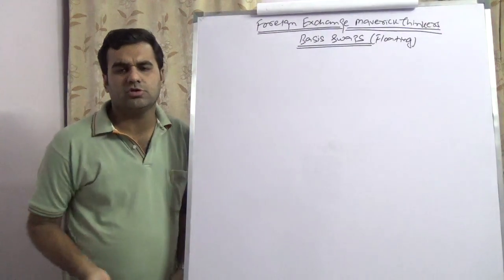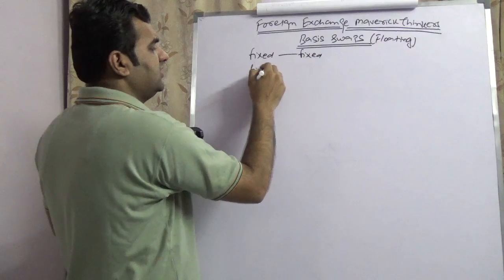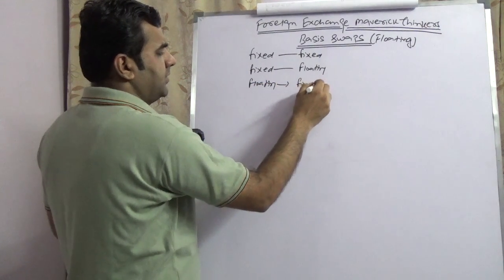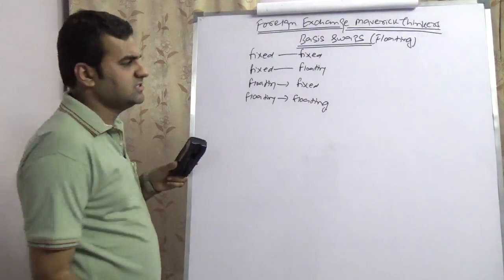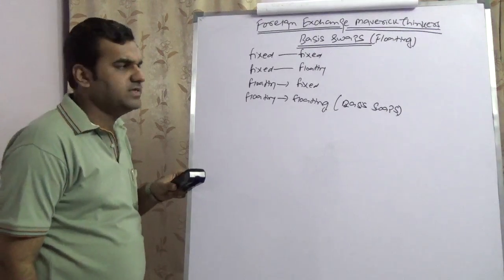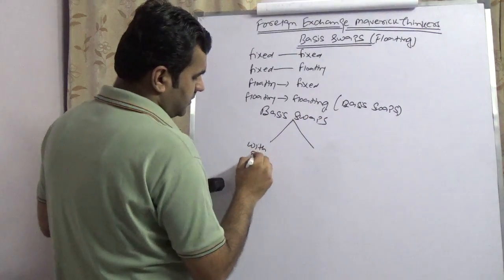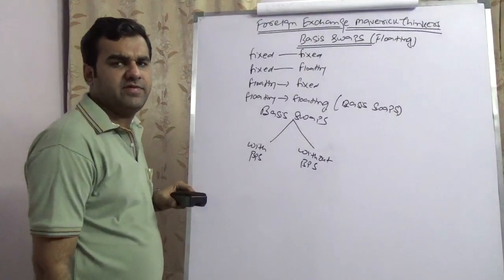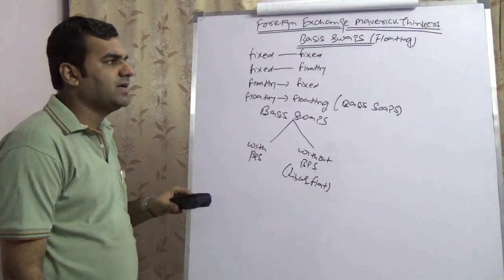Orthodox textbooks mention that you can have a swap where one side is fixed and the second side is floating. But when both sides are floating, that is nothing but a basis swap. Basis swaps are of two types: one with a basis point spread, and second without a basis point, which is referred to as a live of fiat.